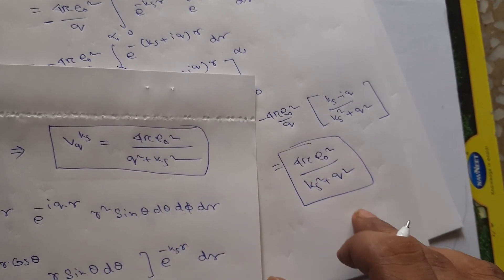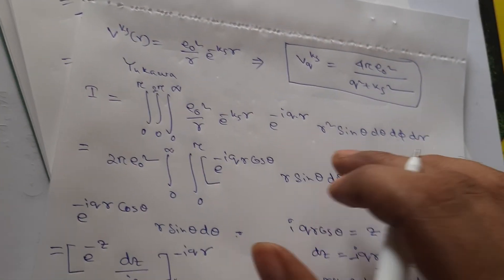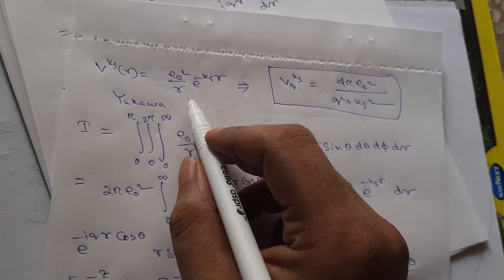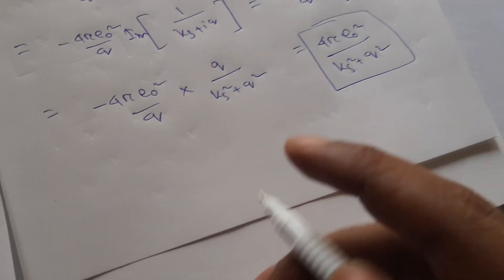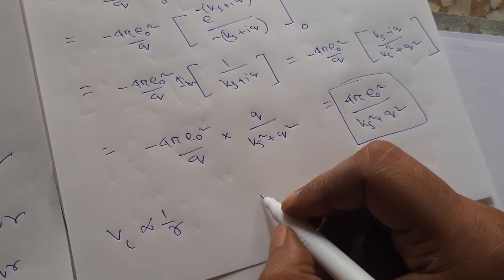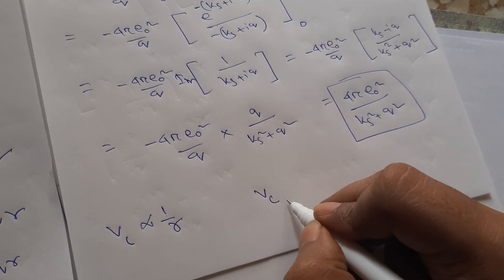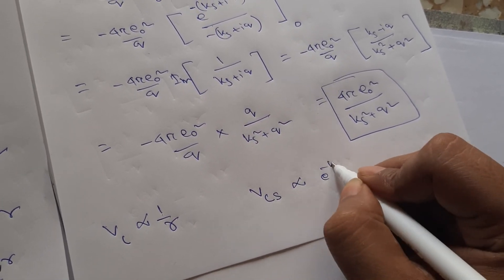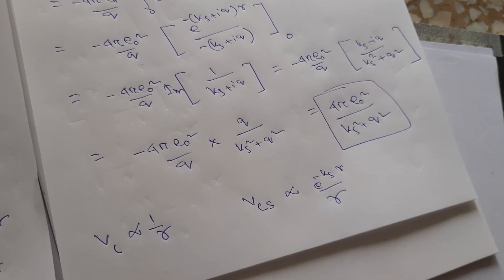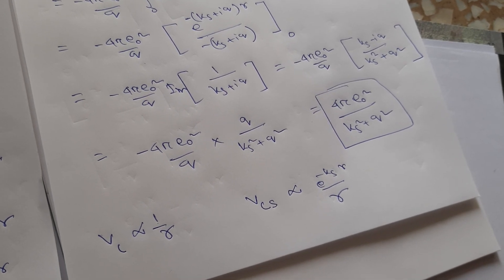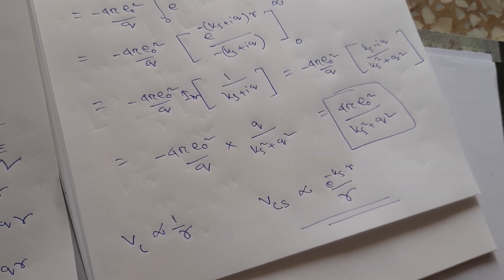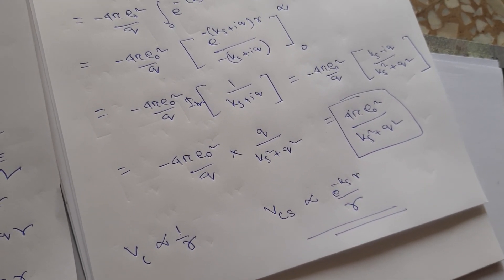This is exactly what was required to show. The Yukawa potential is related to the Coulomb potential: the Coulomb potential is proportional to 1/r, but when you include the screening effect it becomes e to the power minus k_s r over r. This is the Yukawa potential, and its Fourier transform is 4π e₀² over (k_s² + q²). I hope this is clear, and we shall meet in a new video. Thank you.